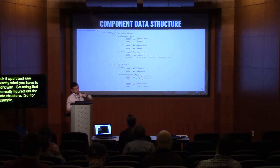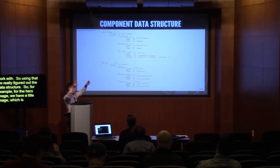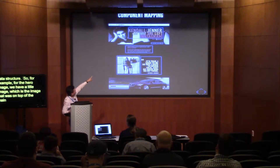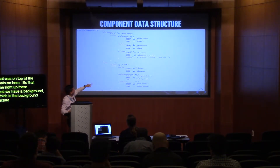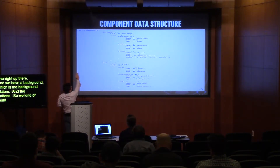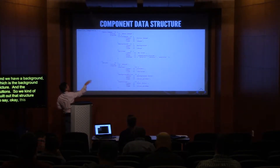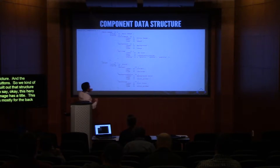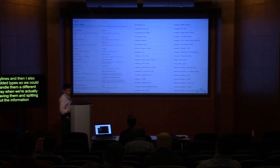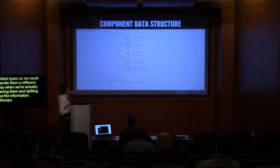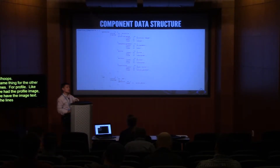Using that, we figured out the data structure. For the hero image, we have a title image — the image on top — and a background, which is the background picture, and the bylines. We build out that structure to say: this hero image has a title. This is mostly for the backend WP side with the bylines. I also added a type field so we could handle them differently when saving and outputting the information. Same thing for the profile — we had a profile image, the image text, the alignment, the code, et cetera. This is actually a simplified version of what we have now.